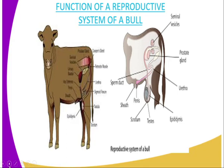Then we have the penis. The penis is a muscular structure, and it is the one which normally deposits the semen into the female reproductive system.